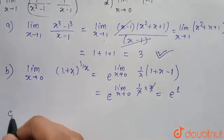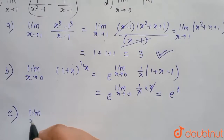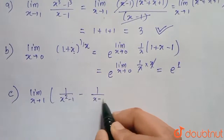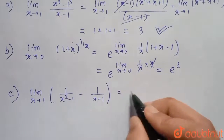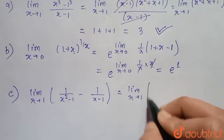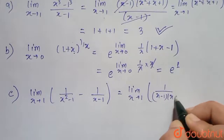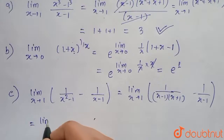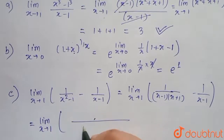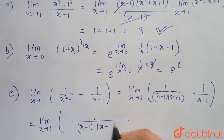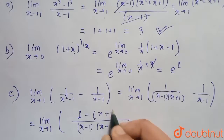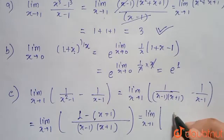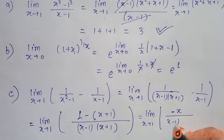Option C is the limit as x tends to 1 of 1/(x² - 1) minus 1/(x - 1). We rewrite 1/(x² - 1) as 1/[(x - 1)(x + 1)]. Taking LCM, this becomes the limit as x tends to 1 of [1 - (x + 1)] / [(x - 1)(x + 1)], which simplifies to the limit of (-x) / [(x - 1)(x + 1)].